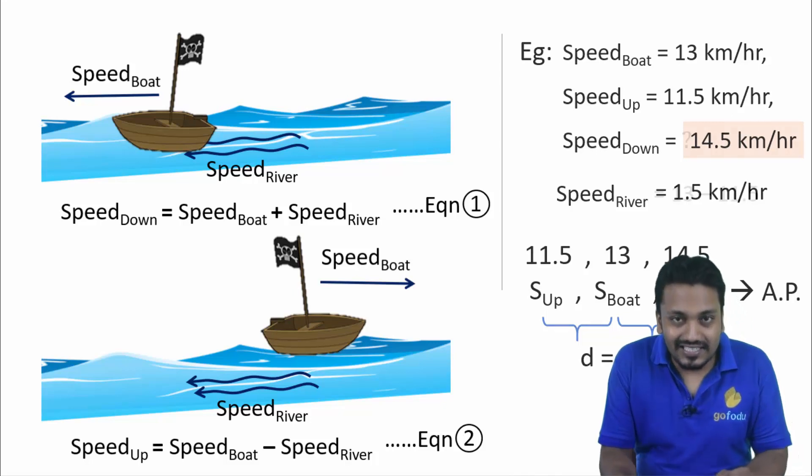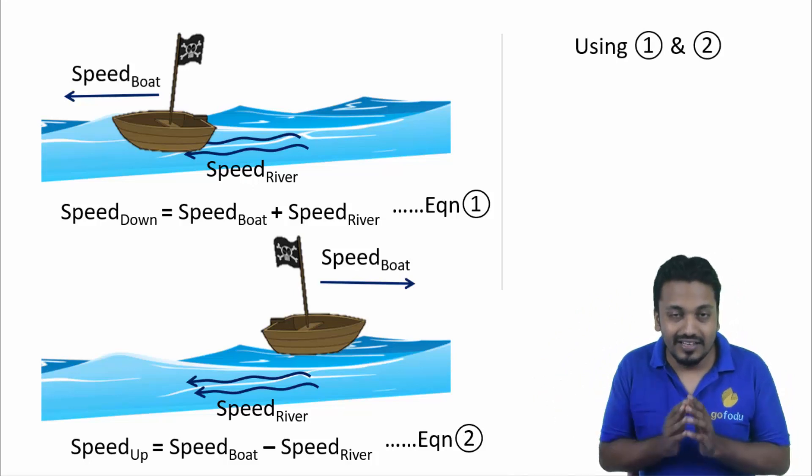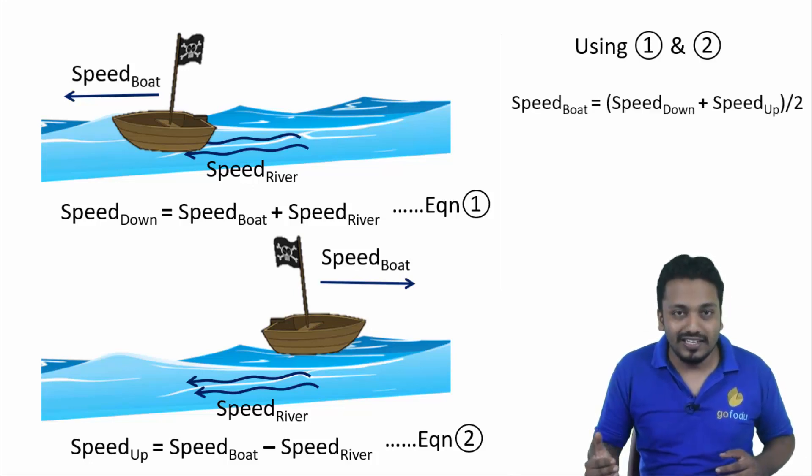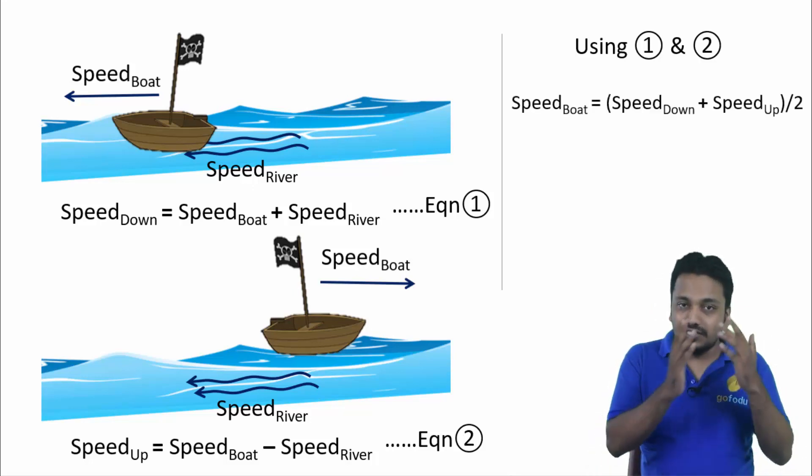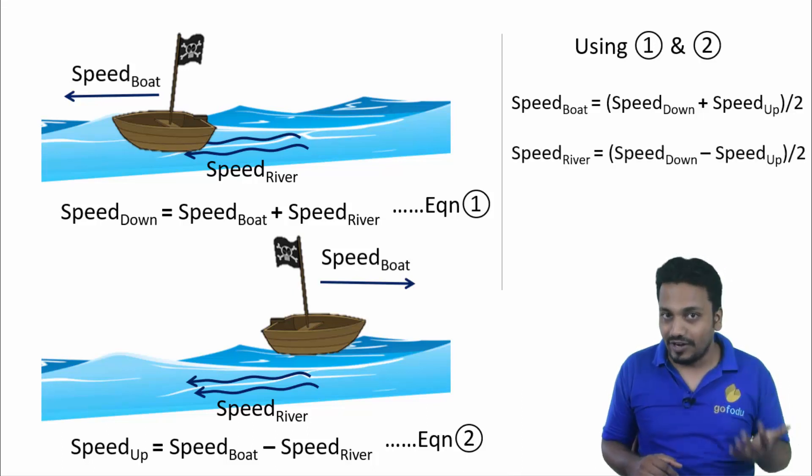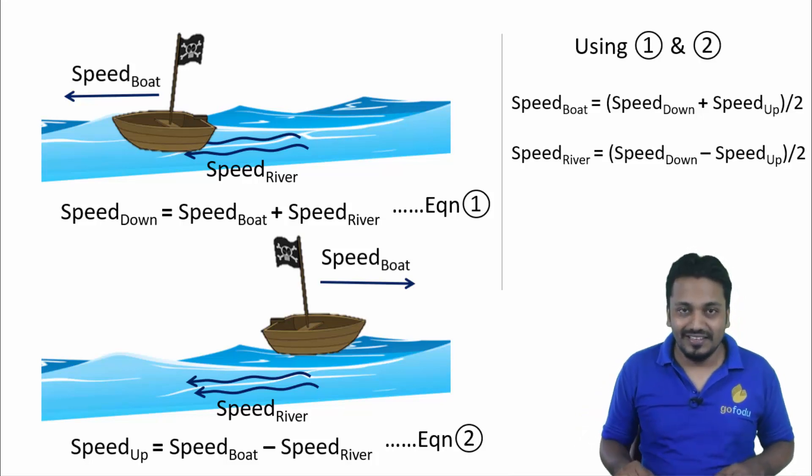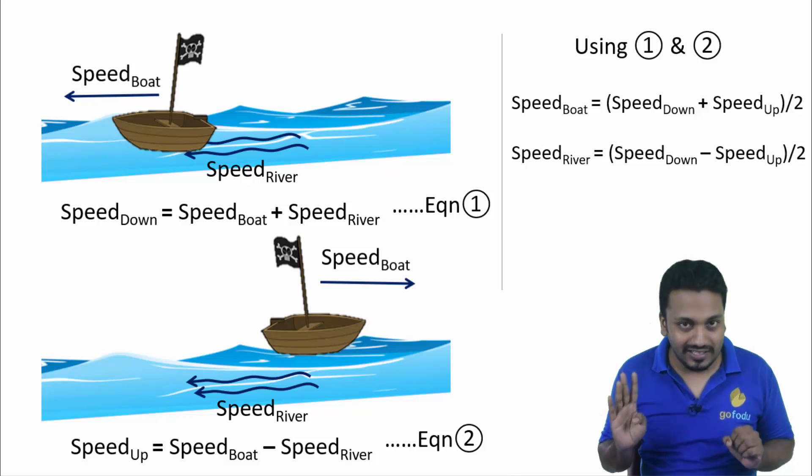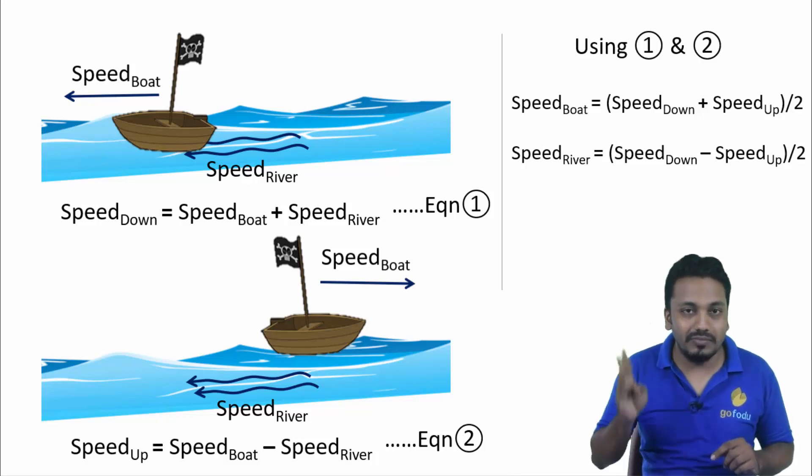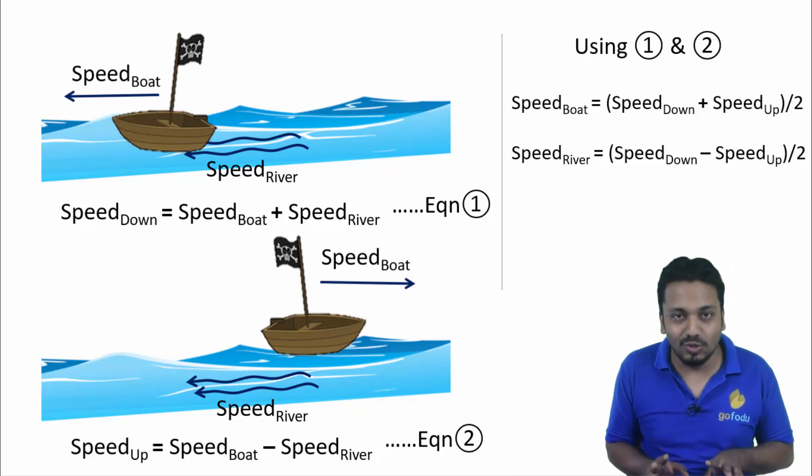Add equation number one and two and we will get speed of boat as speed downstream plus speed upstream upon two. Subtract equation two from one and we will get speed of river as speed downstream minus speed upstream upon two. If any two out of these four parameters are known, we can calculate the remaining two.